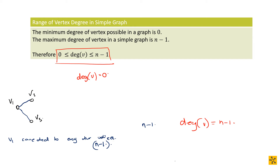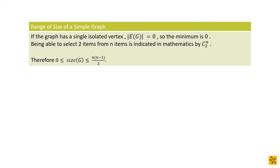The range of the size of the graph is a slightly more fun one. The size of the graph is the number of edges. You could have an isolated vertex meaning there are no edges in the graph — that's the base case with size zero. Going back to the v1, v2, v3 example: if we want to put in as many edges as possible, we're going to make sure that every vertex degree is equal to n minus one — in other words, it's going to be an n minus one regular graph.